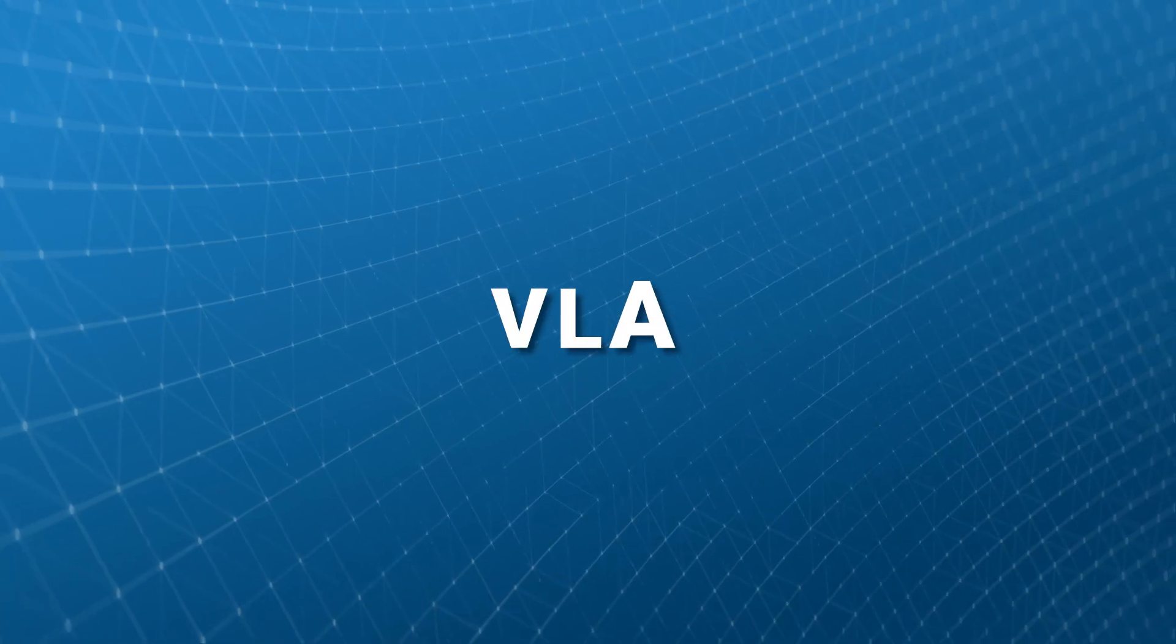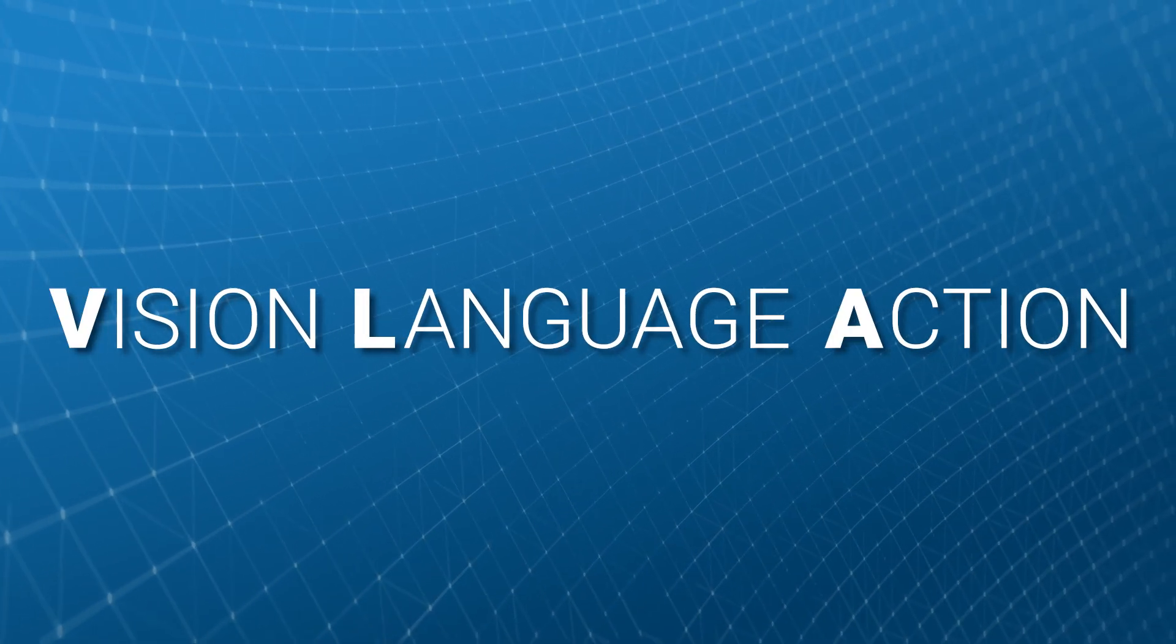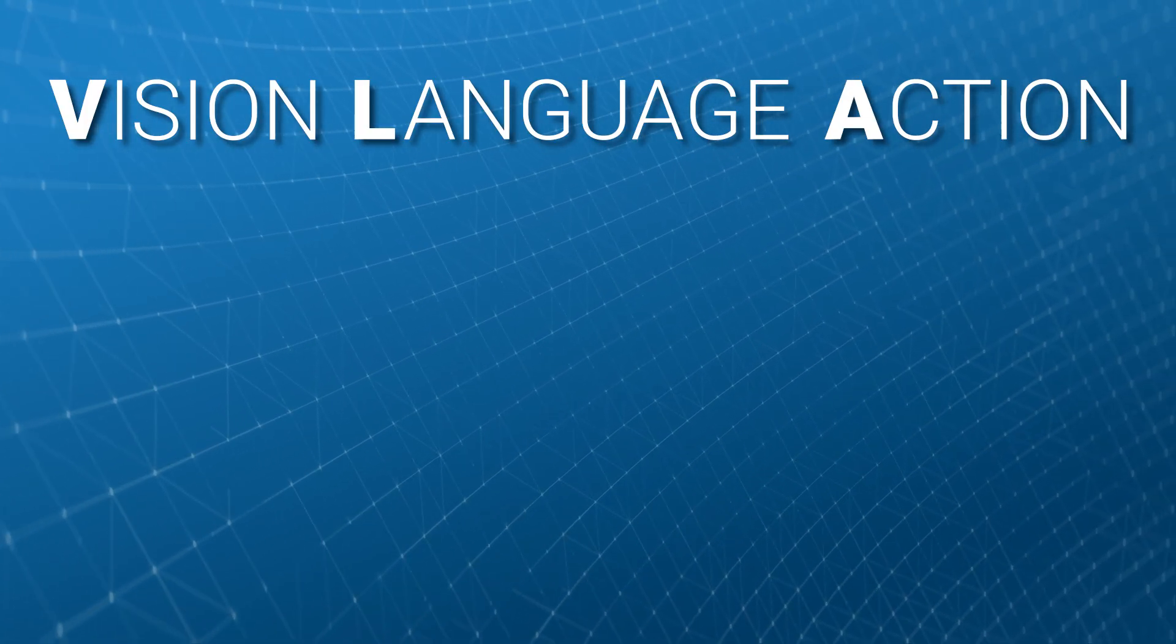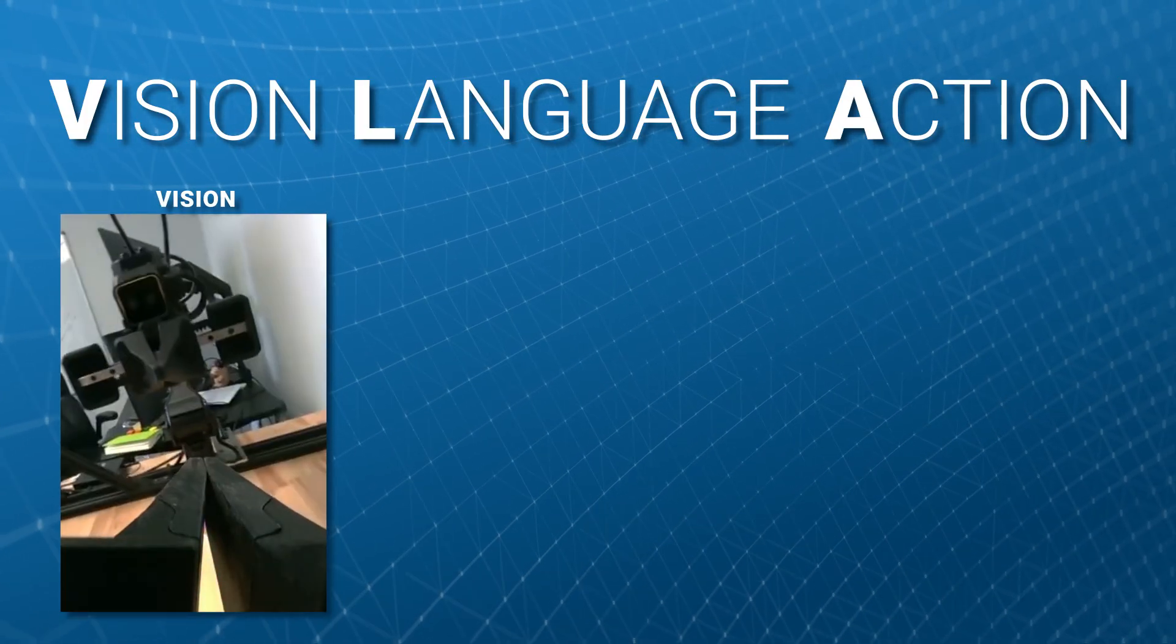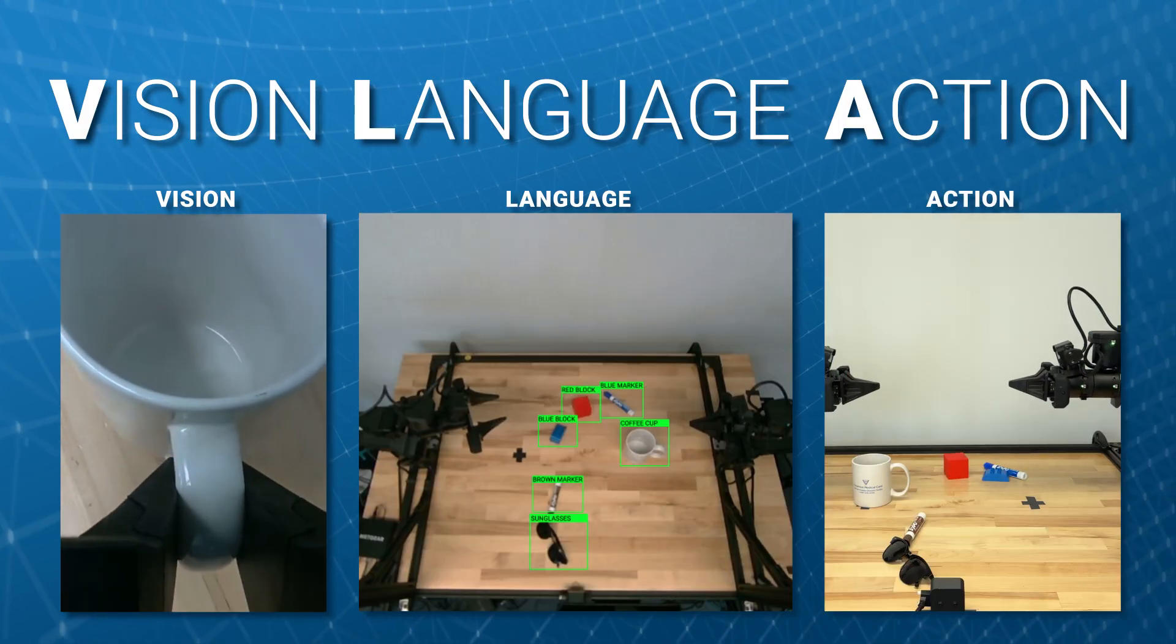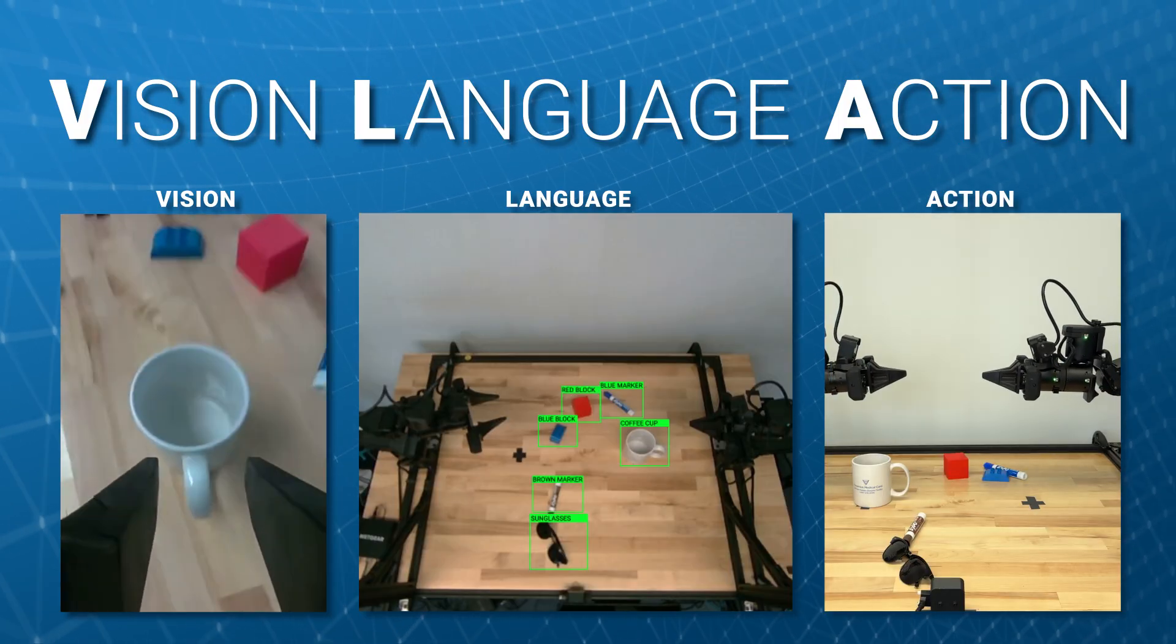When you train a vision language action model, you're not just collecting random video clips. Robots need data that ties three things together: what the robot sees through cameras, language instructions or labels that describe what's happening, and action - the robot's own movements, joint states, or outcomes.